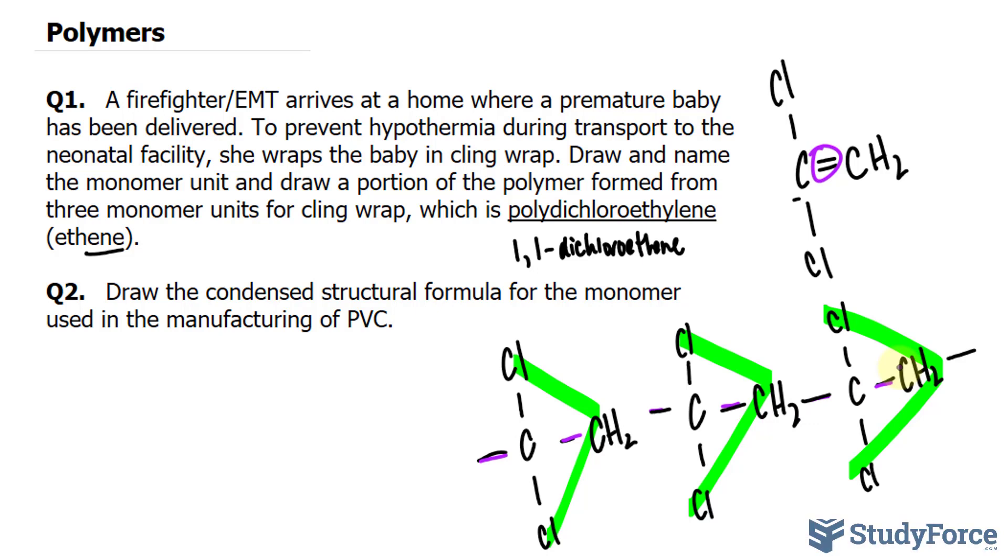In question number two, draw the condensed structural formula for the monomer used in the manufacturing of PVC, polyvinyl chloride.